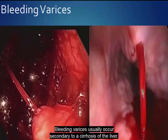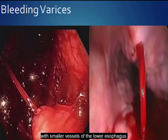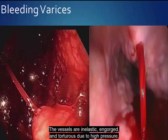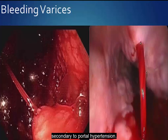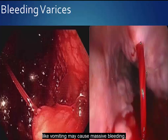Bleeding varices usually occur secondary to cirrhosis of the liver. Branches of the vena cava and the azygos vein combine with smaller vessels of the lower esophagus. The vessels are inelastic, engorged, and tortuous due to high pressure secondary to portal hypertension. Anything that increases pressure, like coughing or sneezing, or causes irritation, like vomiting, may cause massive bleeding.